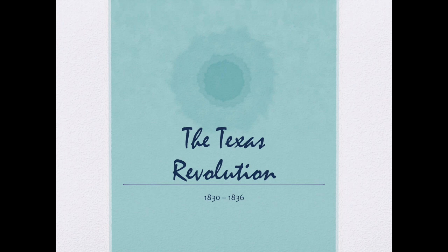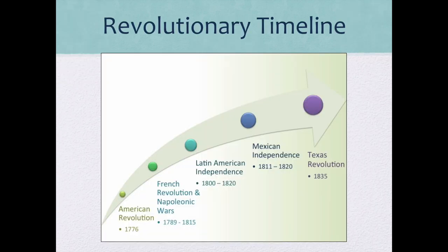The Texas Revolution started in 1830. We tend to think of it starting at the Alamo, but it actually had its origins before then. People were moving into the Texas region from the United States, brought by people like Stephen F. Austin and other empresarios. If we look 60 years before the Texas Revolution, you have the American Revolution and its Enlightenment ideology of people determining their government, which influenced other revolutions — the French Revolution, revolutions in Mexico and South America, and certainly the Mexican independence movement. The Texas Revolution was part of that revolutionary timeline.